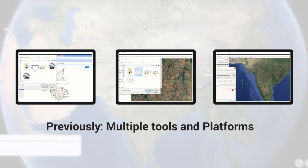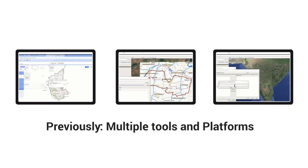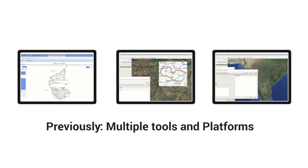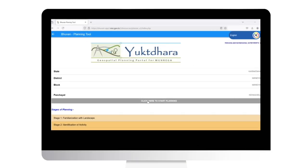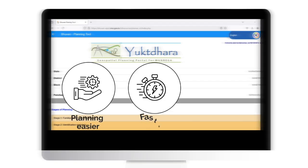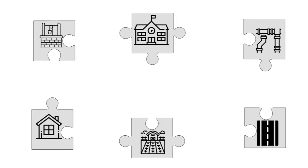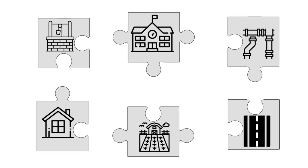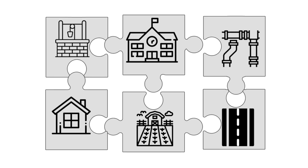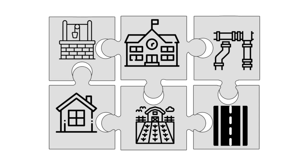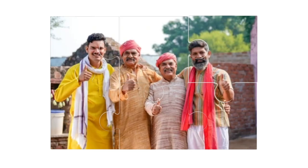Previously, Gram Panchayats had to use multiple tools and platforms for GIS-based planning. Now, with Yuktadhara, everything is available in one place, making planning easier, faster, and more efficient. By integrating multiple layers of geospatial data, Yuktadhara simplifies decision-making and ensures better utilization of resources for sustainable rural development.